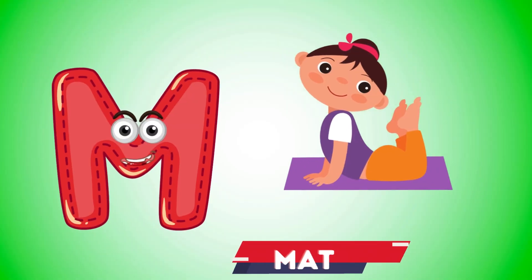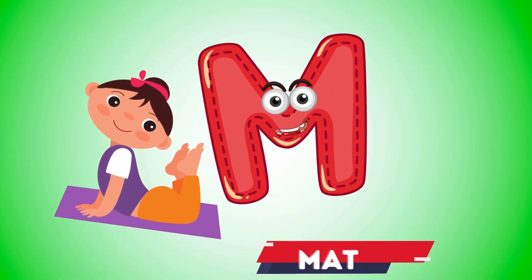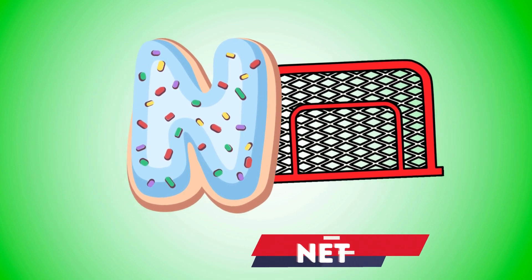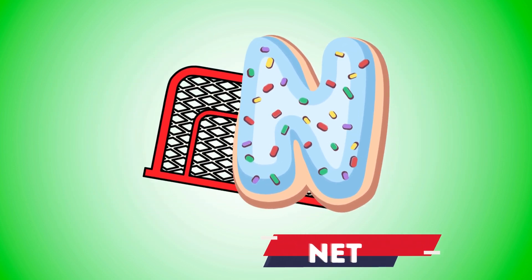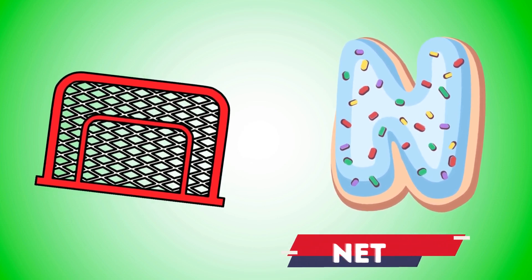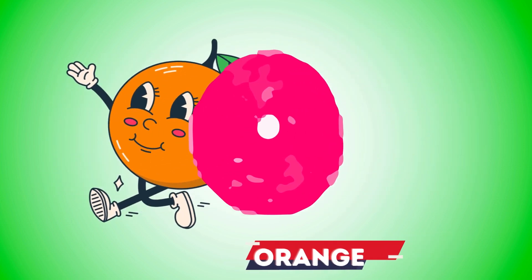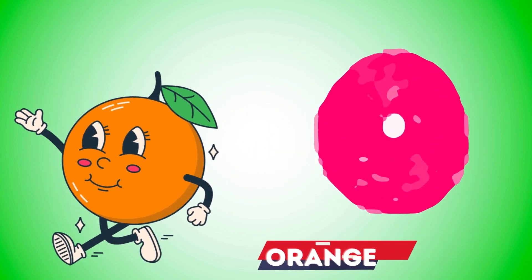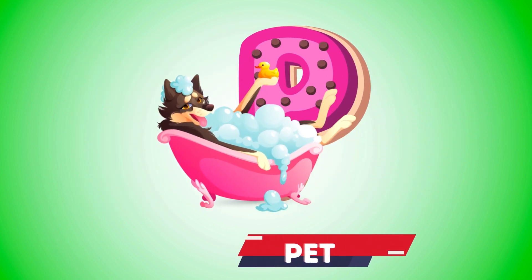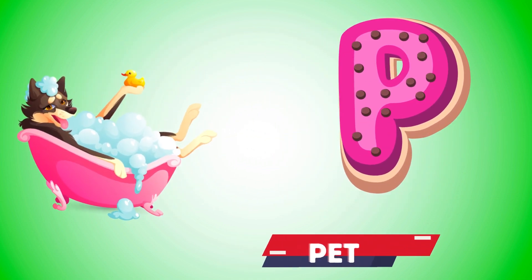M is for mat, m-m-mat. N is for net, n-n-net. O is for orange, o-o-orange. P is for pet, p-p-pet.